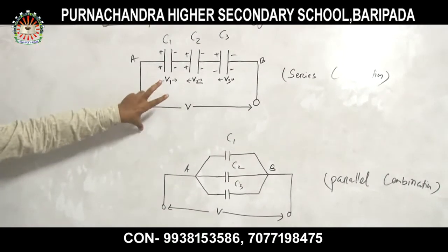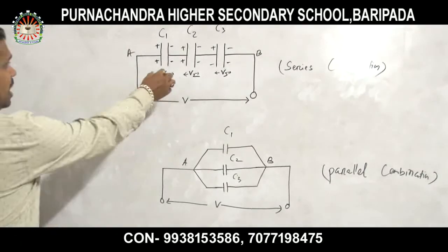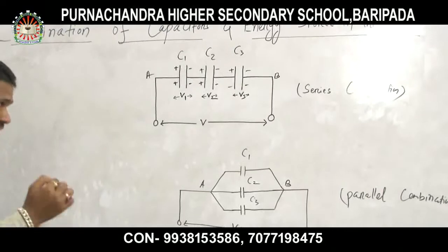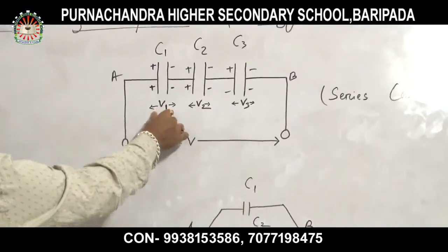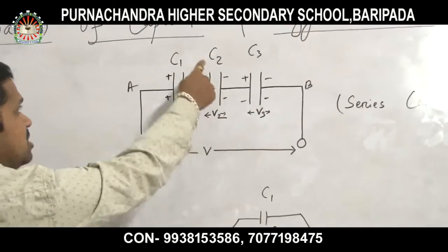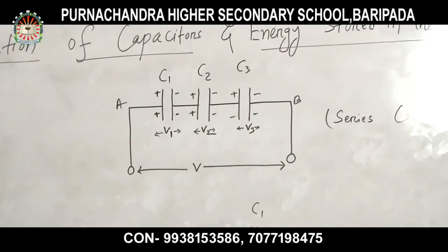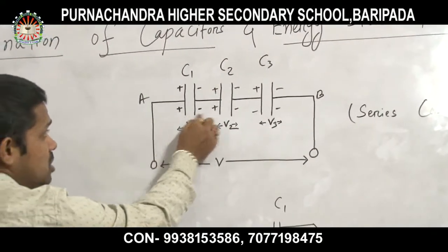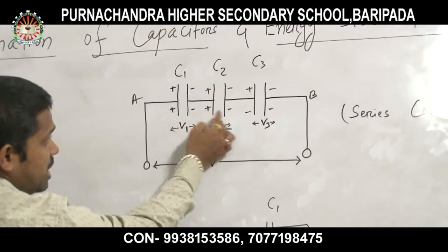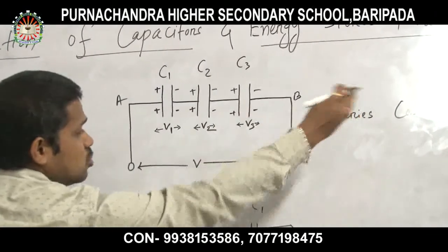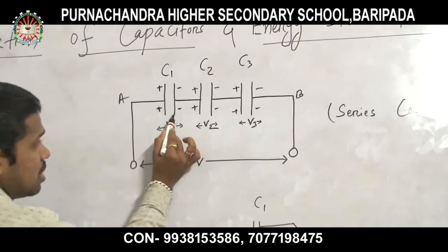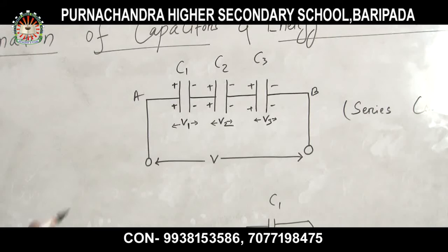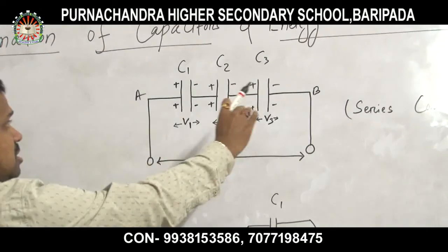As you have seen in the figure, we are taking three capacitors C1, C2, and C3. In series connection, the capacitors are connected such that the negative terminal of one is connected to the positive terminal of the next — negative to positive, again negative to positive. This is how we verify whether it is a series connection. In series combination, the positive terminal cannot be connected to another positive terminal.